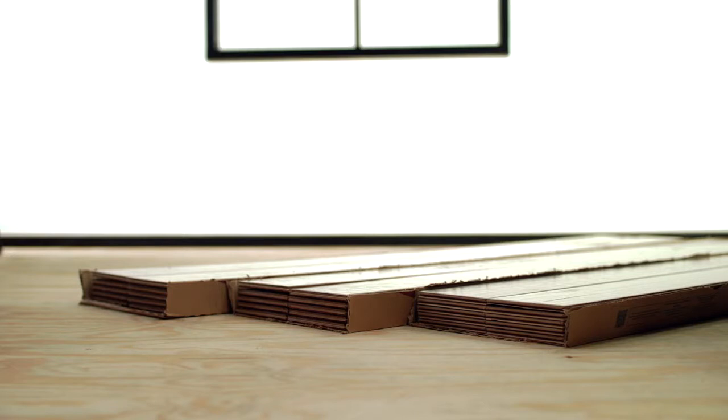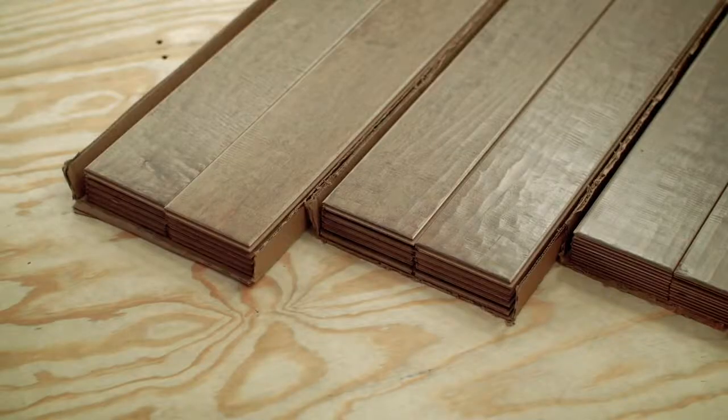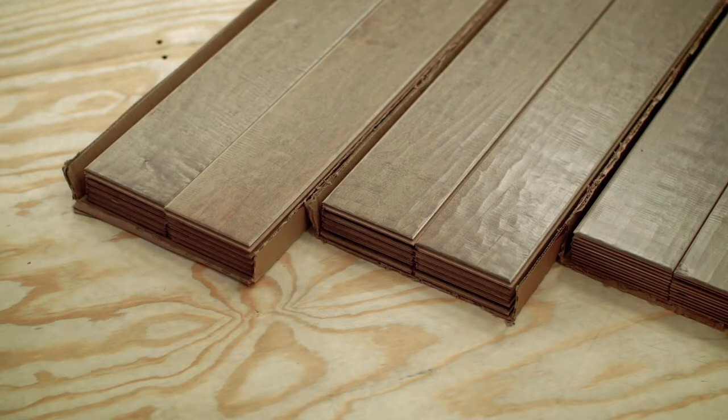You'll need to maintain a temperature between 65 and 75 degrees Fahrenheit and a relative humidity of 35 to 55 percent for a minimum of five days prior to the delivery of the floor, as well as during and after installation. When the flooring arrives, open the ends of the cartons and leave them stacked no more than three cartons high in the room where the flooring will be installed.